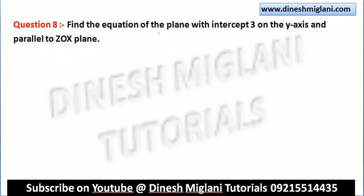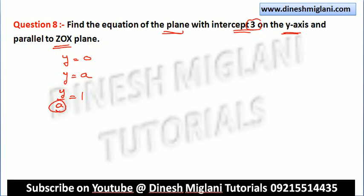Question 8: Find the equation of a plane with intercept 3 on the y-axis and parallel to the ZOX plane. Any plane parallel to the ZOX plane (where y = 0) has the form y = constant. Since the y-axis intercept is 3, the required equation is y = 3.